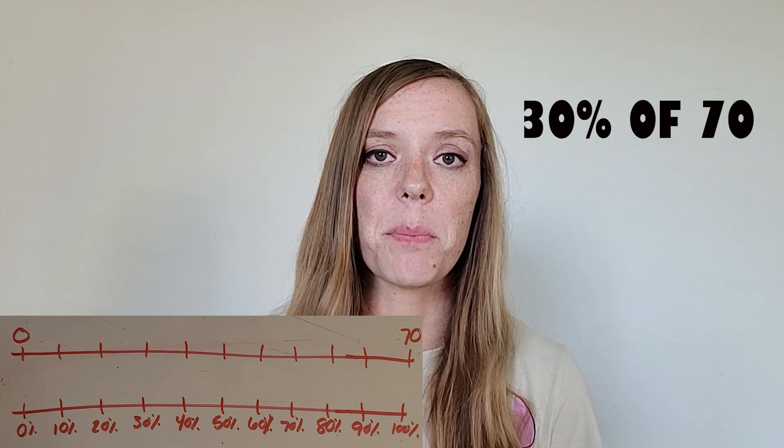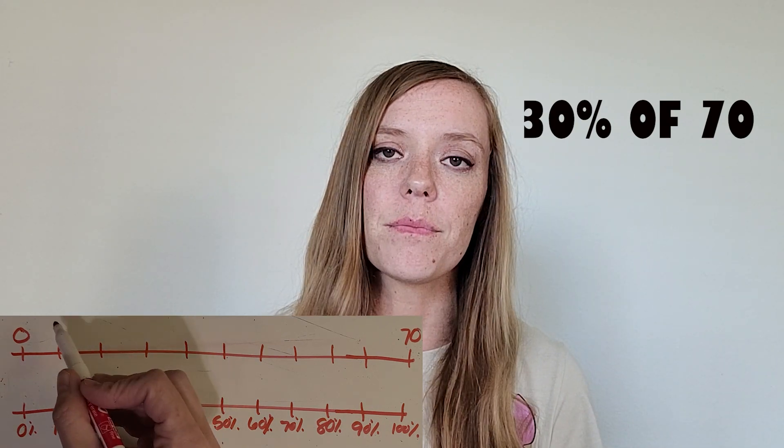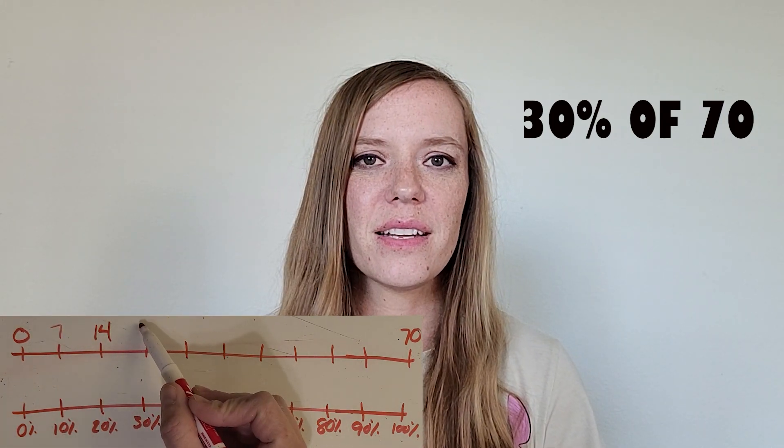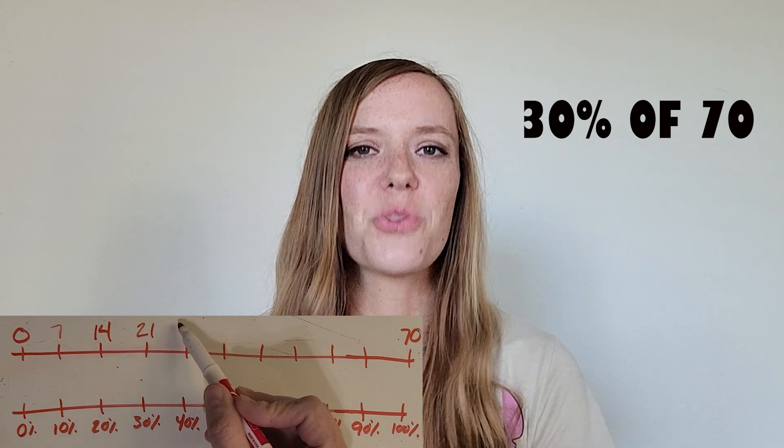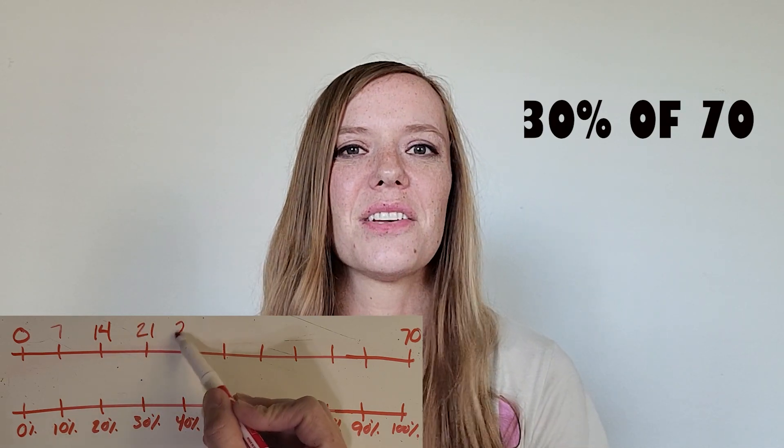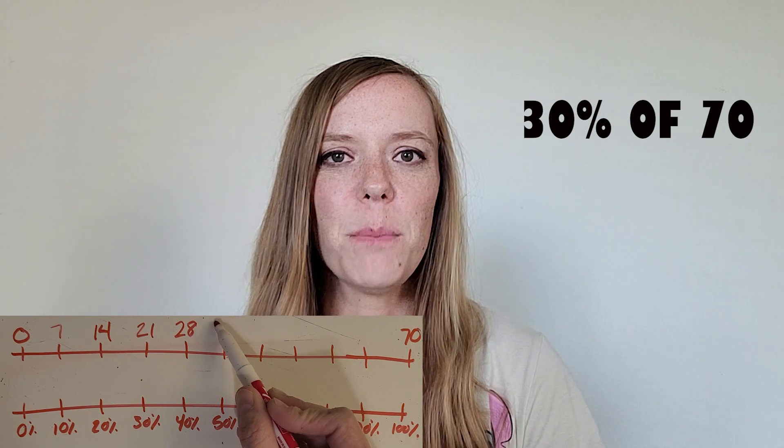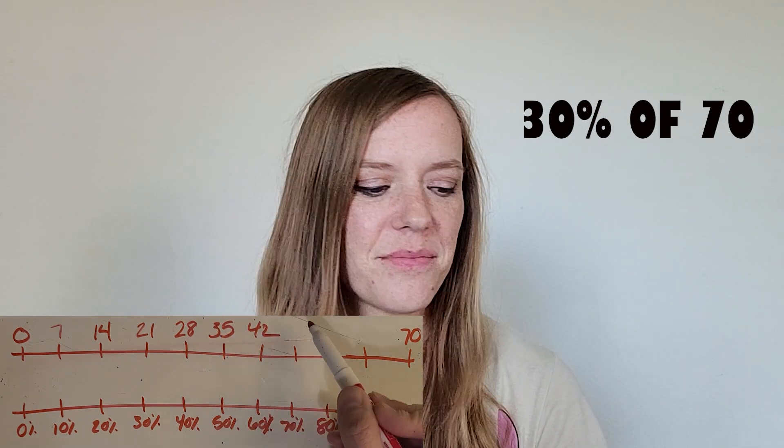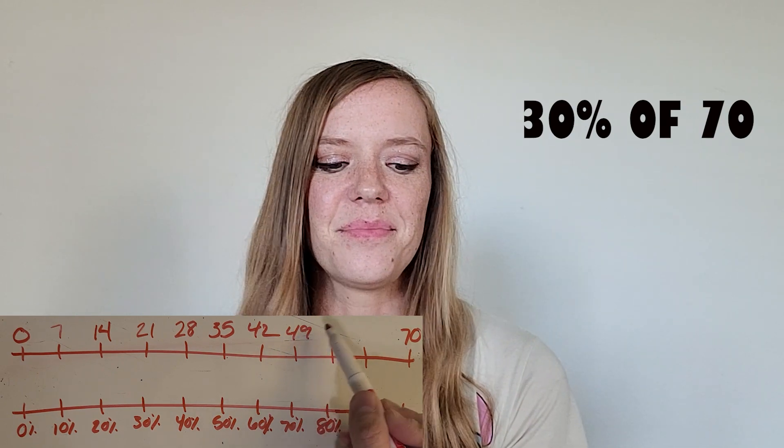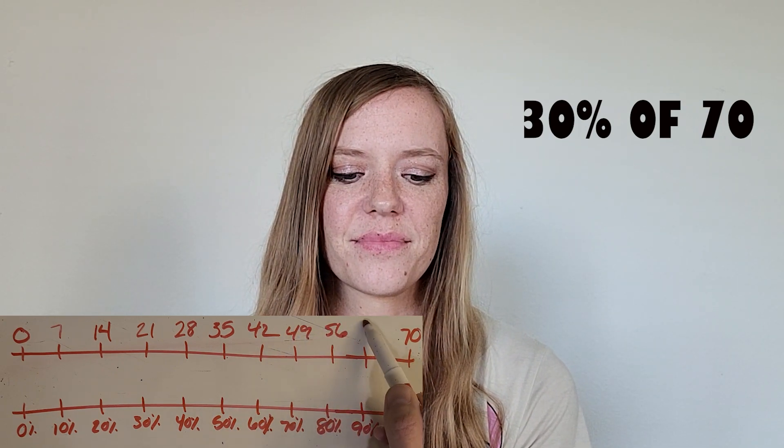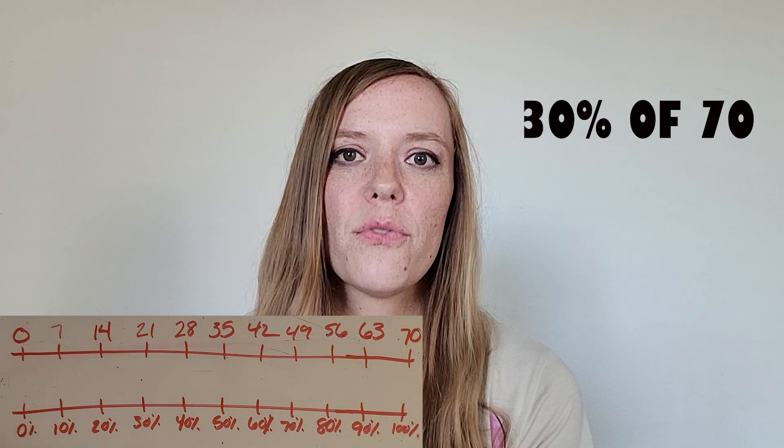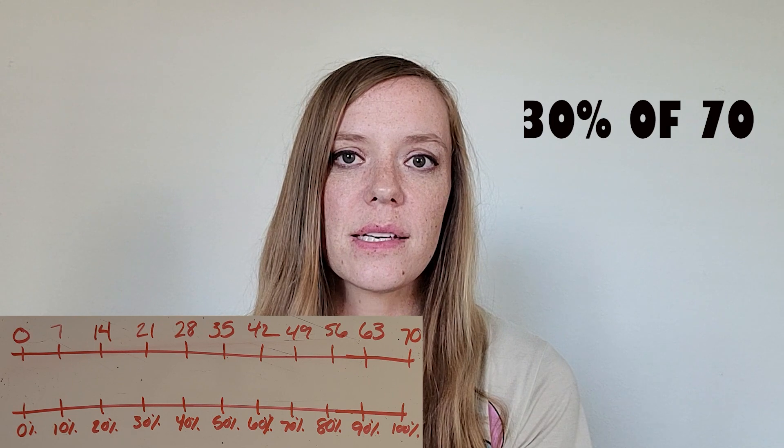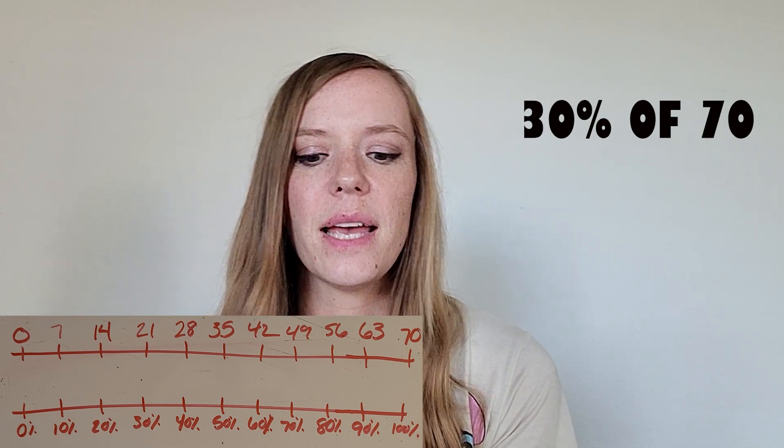So let's start with counting by 7. So 7, 14, 21, you're getting it, 28, 35, keep going until you get to 70. Okay then you got 42, 49, 56, 63, and 70.